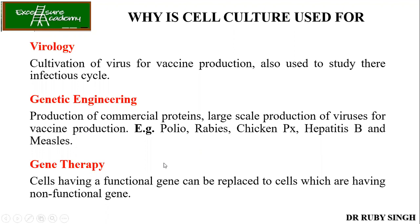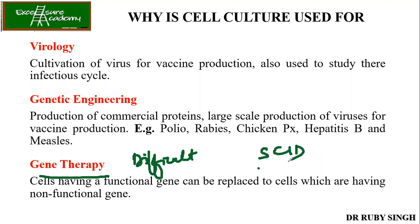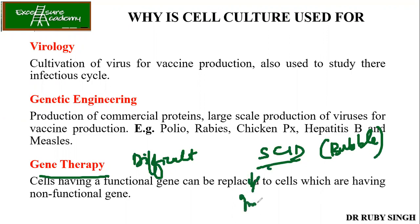We have gene therapy — cells having functional genes can be replaced into cells which have non-functional genes. Even though it seems easy to say, it is just as difficult to carry out. If you have heard about SCID — severe combined immunodeficiency — the patient lives inside a bubble, covered with plastic with only sterilized air passed in. People with SCID are immunocompromised and very sensitive — even a single bacterium can kill them. That's why only sterilized air is provided into their chamber.